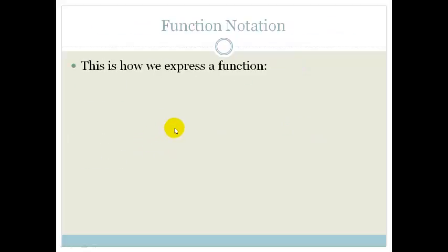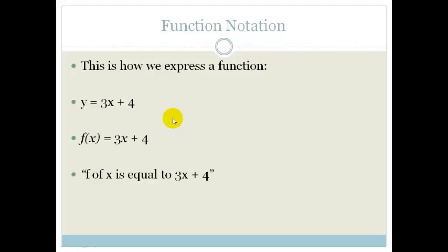Let's look at the function notation — this is how we express a function. y is equal to 3x plus 4; in other words, y is dependent on x, and we manipulate the x to give us a y. We can also write it as f of x equals 3x plus 4. That's exactly the same as saying y is equal to 3x plus 4 — f of x, in other words a function of x, is equal to 3x plus 4. Don't worry if in the exams they use g of x, p of x, t of x, q of x, or r of x — it really doesn't matter what the letter is.